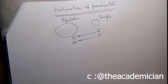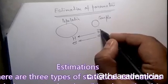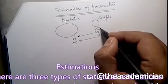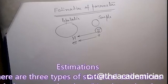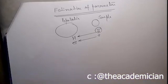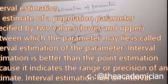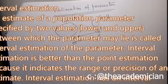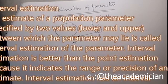There are three types of statistical estimations: judgment estimation, point estimation, and interval estimation. The sample mean is an example of point estimation. In this video we will talk about interval estimation in detail. An estimate of a population parameter specified by two values — a lower and upper — between which the parameter may lie is called interval estimation. Interval estimation is better than point estimation because it indicates the range or precision of the estimate.